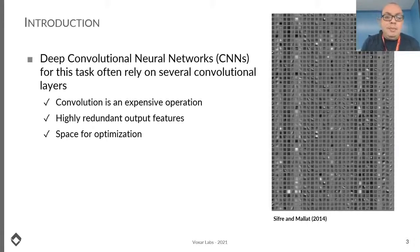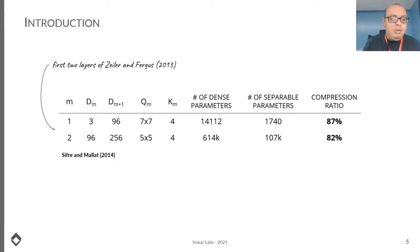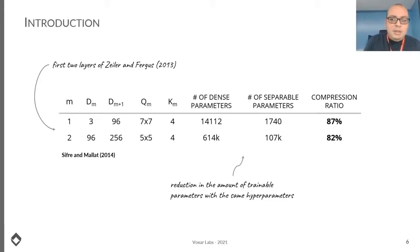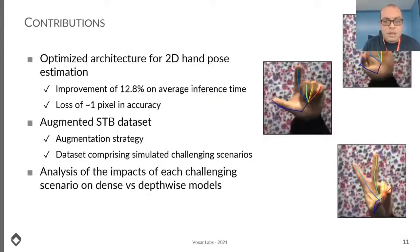Depth-wise separable convolutions may be used to accelerate inference time and select more descriptive output features. In an experiment by Sifrin and Mahler in their PhD thesis, they swapped the first two convolutional layers of a model proposed by Zeiler and Fergus for image recognition with separable convolutions, demonstrating that reducing training parameters allows efficient models to execute on mid-end GPUs or embedded devices. However, reducing trainable parameters may hurt accuracy, especially for tracking systems where challenges like loss of focus, motion blur, and occlusions are expected.